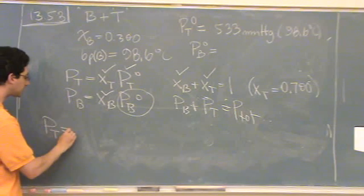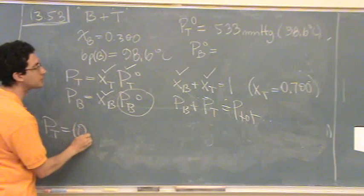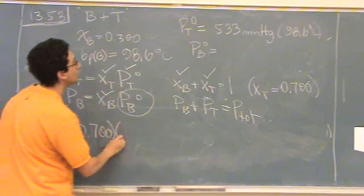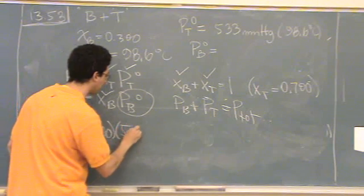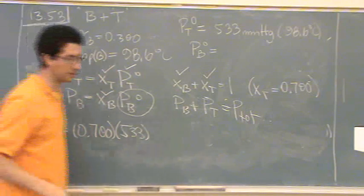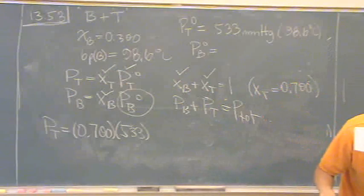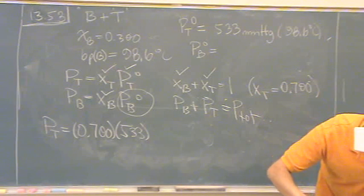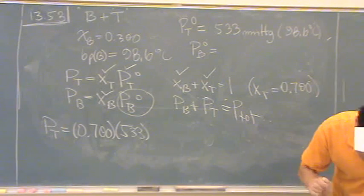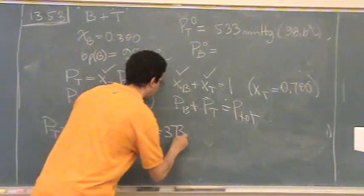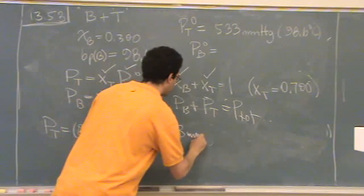Pt, the partial pressure of toluene, is the mole fraction of toluene, 0.700, times the pressure of the pure toluene, 533. Let me see if the text solves that one out. This is number 53. That's 373 millimeters of mercury.